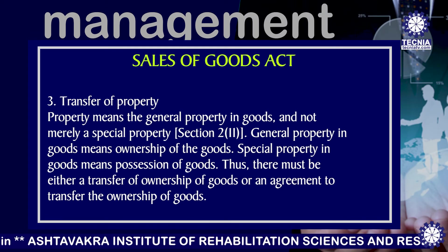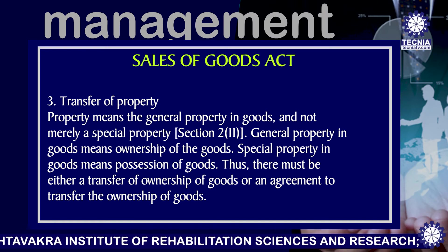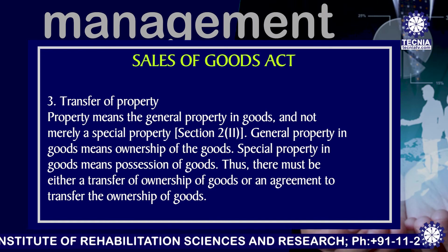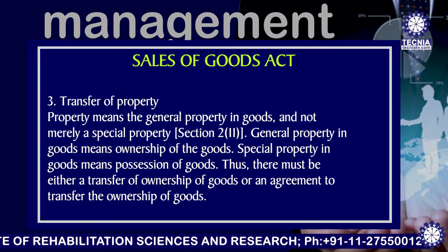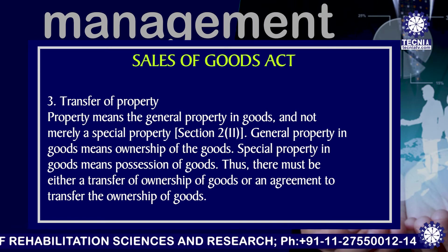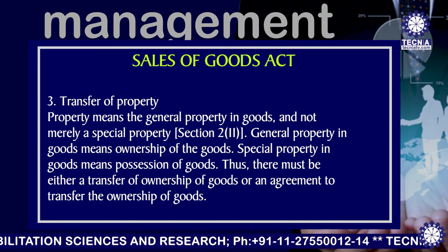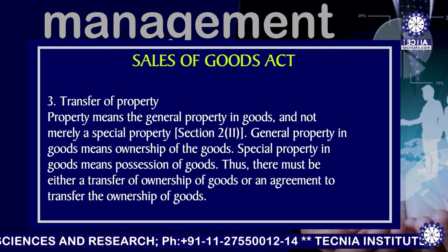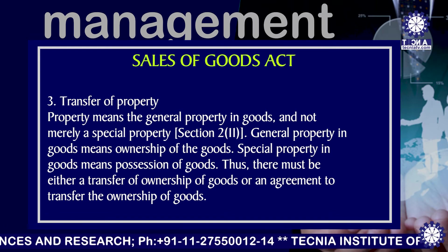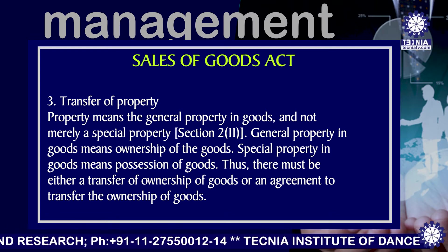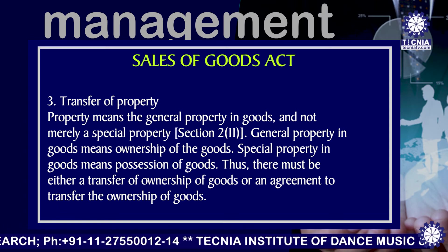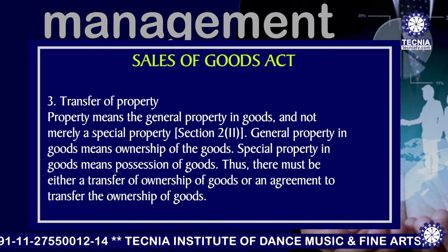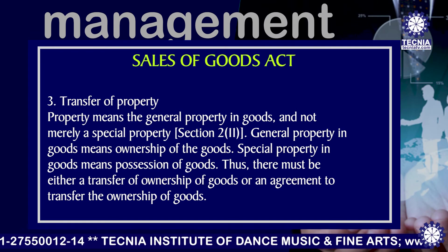Number 3, transfer of property. Property means general property in goods and not merely a special property. Section 2, subsection 11. General property in goods means ownership of the goods. Special property in goods means possession of the goods. Thus, there must be either a transfer of ownership of goods or an agreement to transfer the ownership of goods.